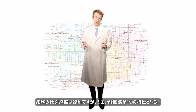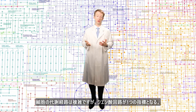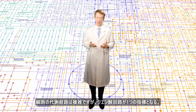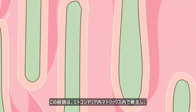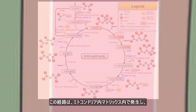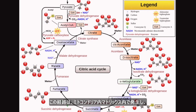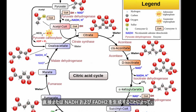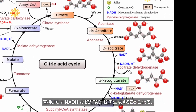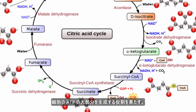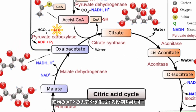The cell's metabolic pathways are incredibly complex, but you can always orient yourself by way of the citric acid cycle. This pathway takes place within the inner mitochondrial membrane and is responsible for the bulk of the cell's ATP production, either directly or through NADH and FADH2.